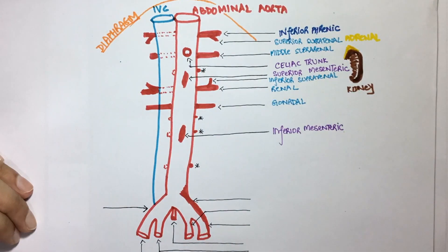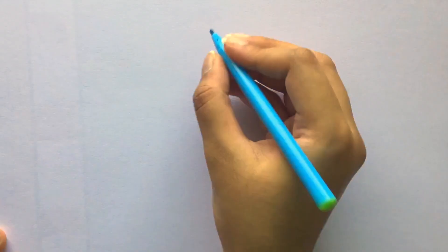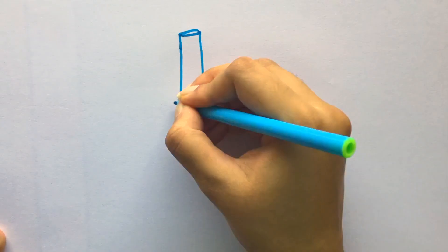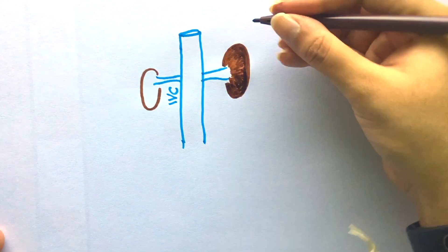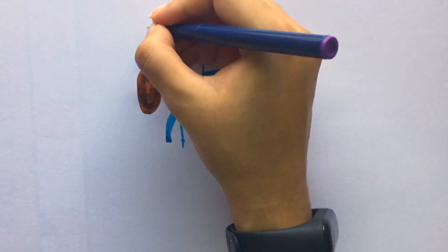Most of the time, arteries and veins follow a similar branching pattern, but in the case of gonadal blood vessels it is a little different. The gonadal arteries are branches of the abdominal aorta. The right gonadal vein empties into the inferior vena cava, but the left gonadal vein drains into the left renal vein.